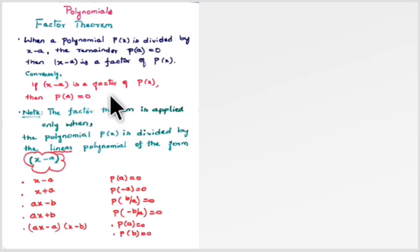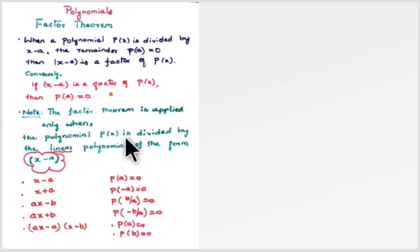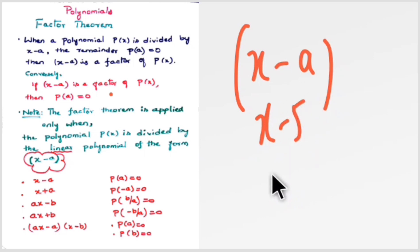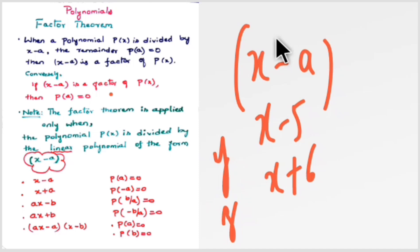Note that the factor theorem is applied only when the polynomial p(x) is divided by a linear polynomial of the form (x − a). The divisor must be linear — you should not have any square or cube of the variable x. It will be like (x − 5) or (x + 6), just x with a constant. The variable could also be y or z depending on the polynomial.